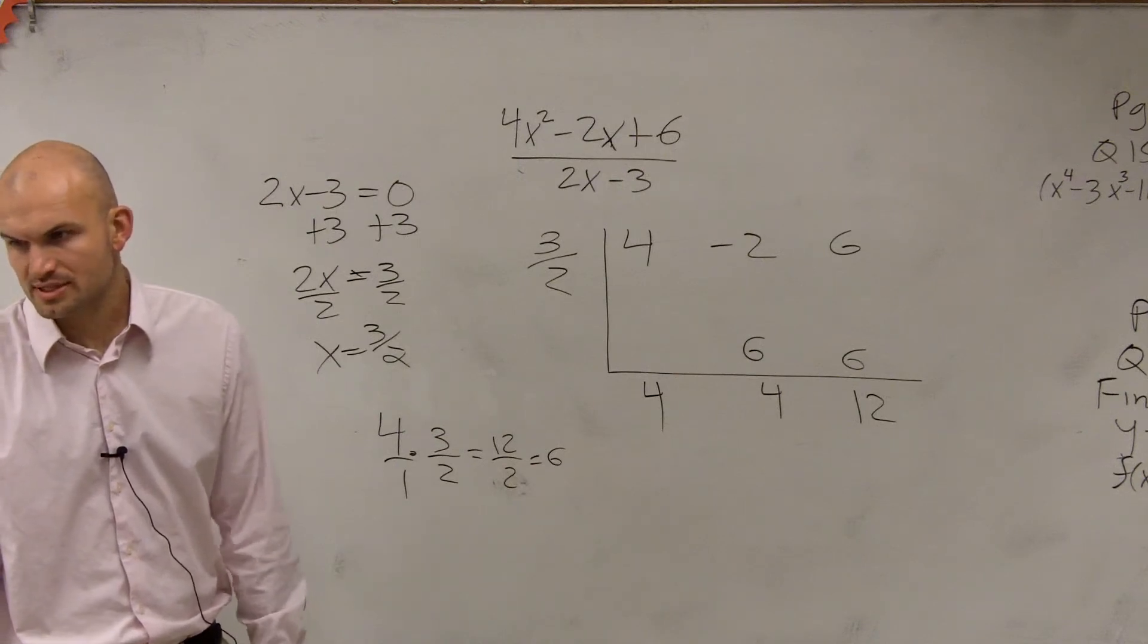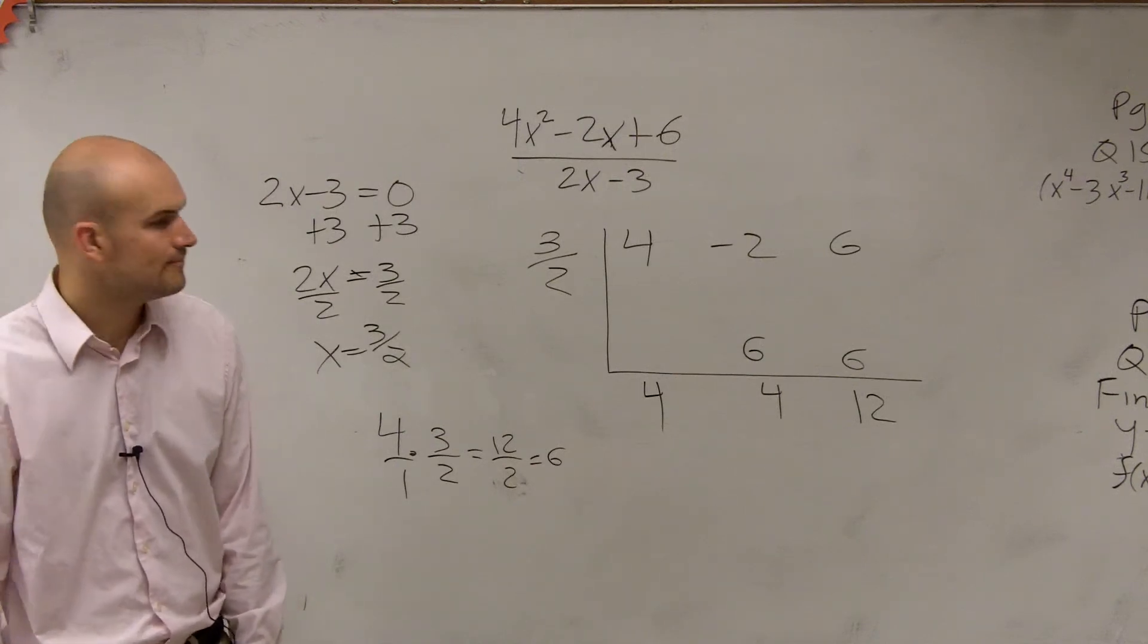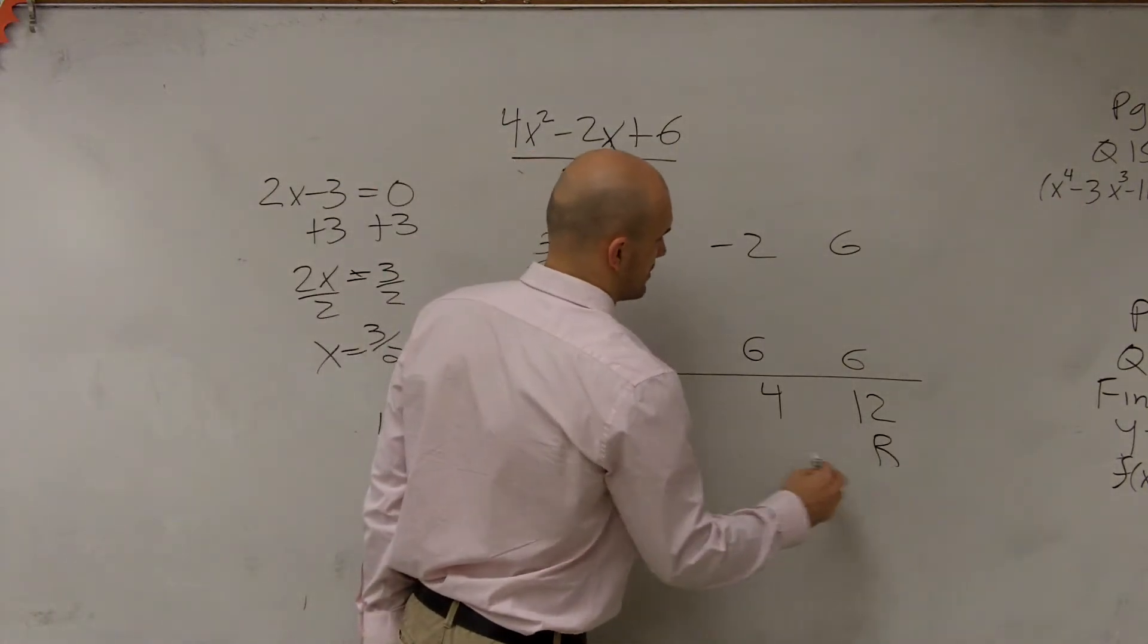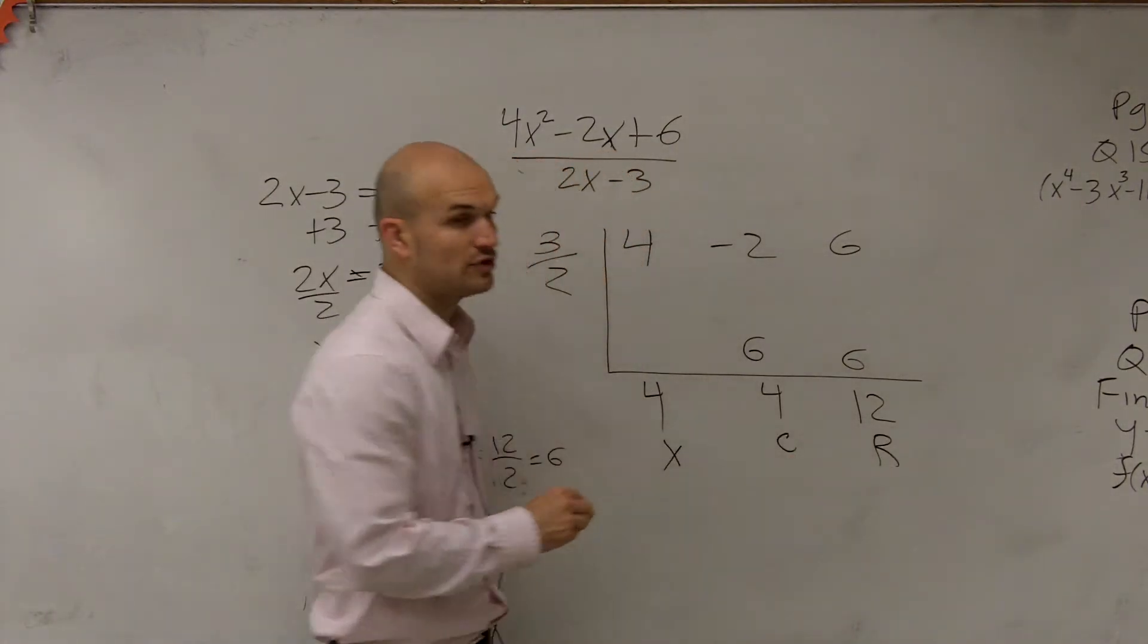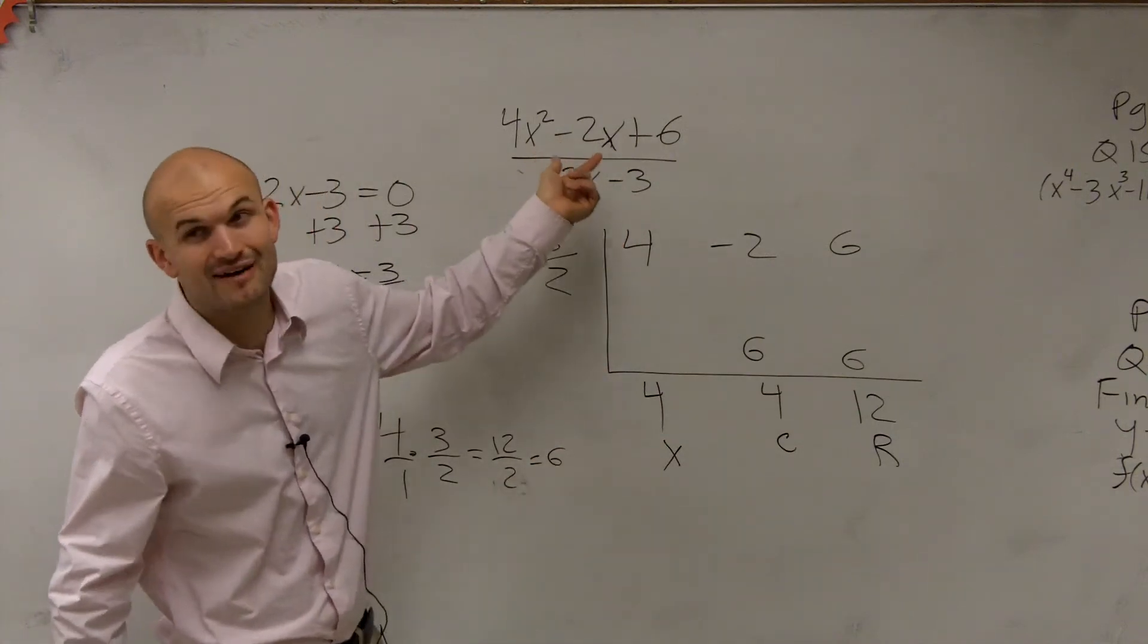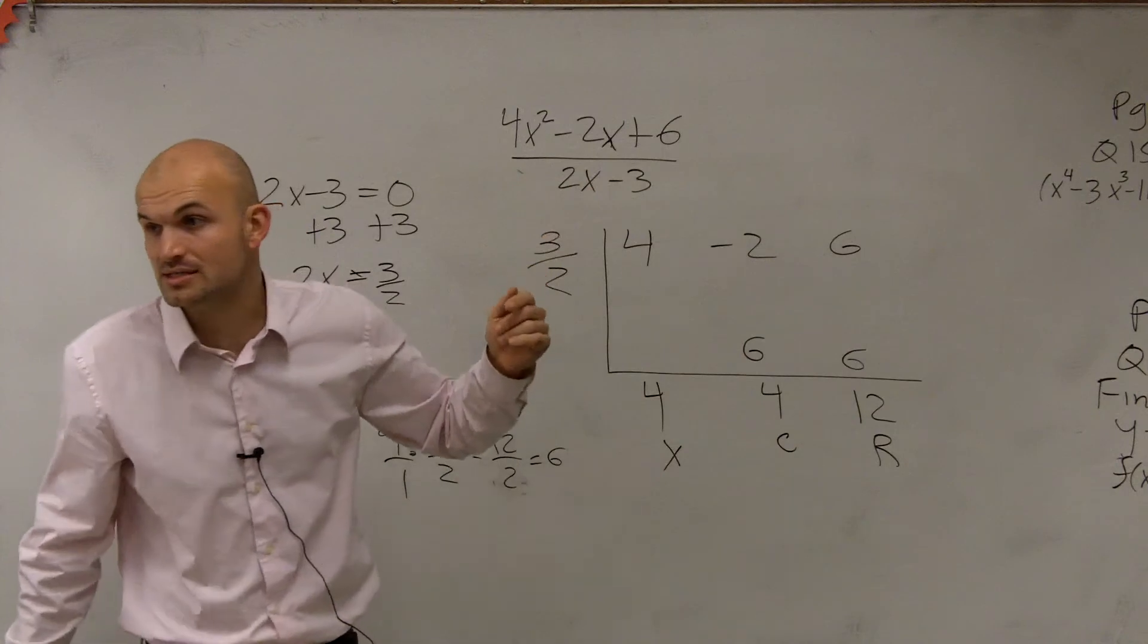It wasn't minus 6, it was plus 6 at the end? Okay. So therefore, in this case, we have a remainder, we have a constant, and we have a linear term. So therefore, 2x minus 3 does not evenly divide into 4x squared minus 2x plus 6.